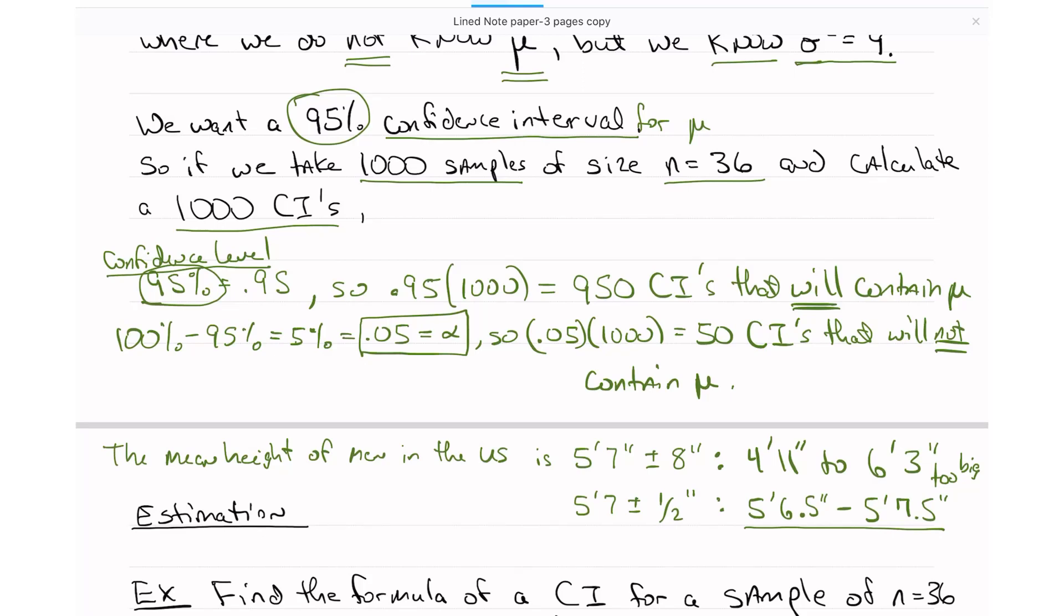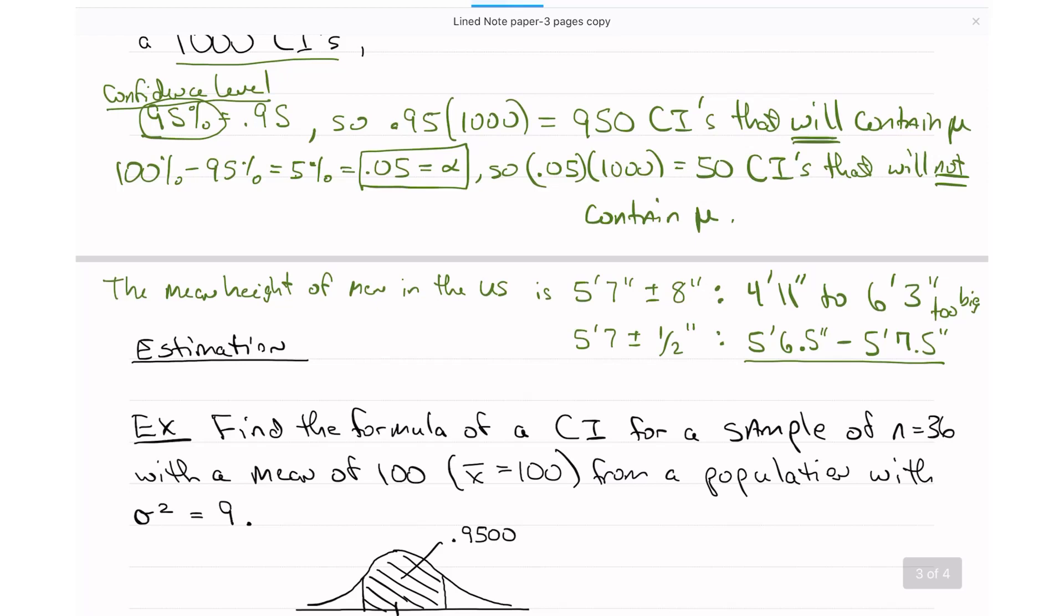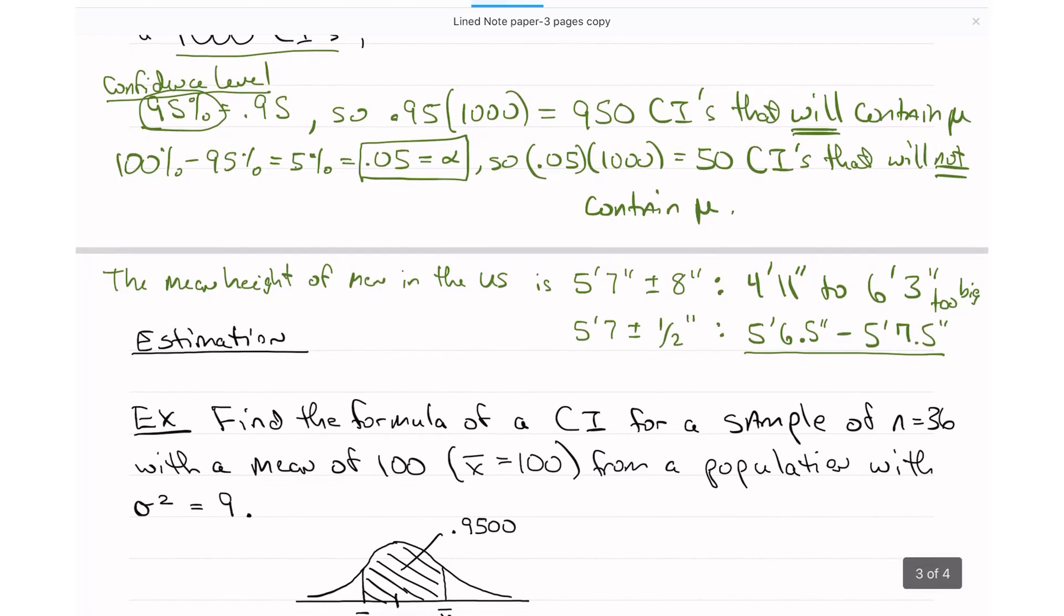It turns out that the higher the confidence level, if we don't change anything else, the longer the confidence interval. And how we take care of that is by taking a bigger sample size. We'll talk about that again. For now, let's actually do an example.